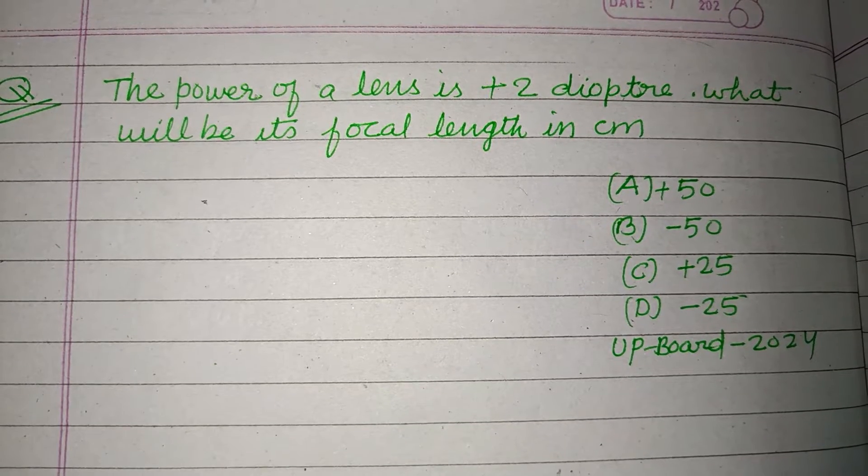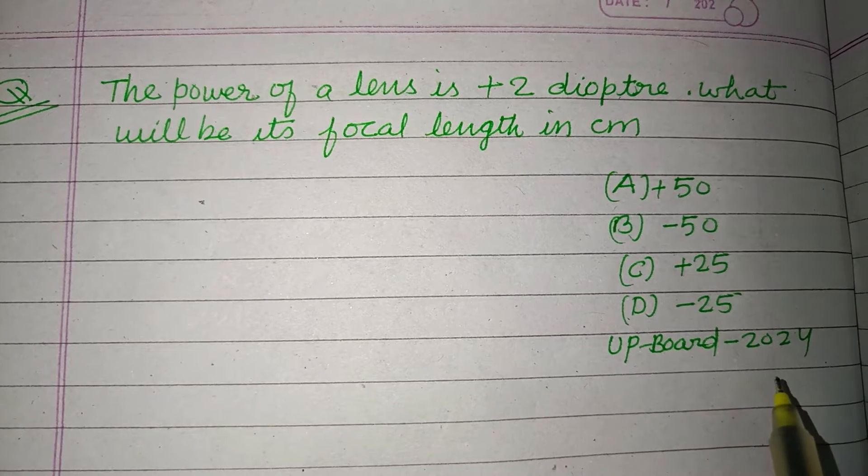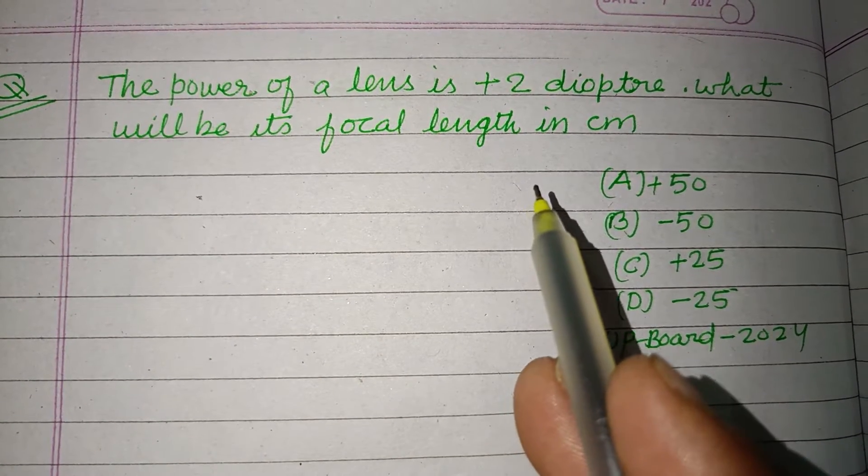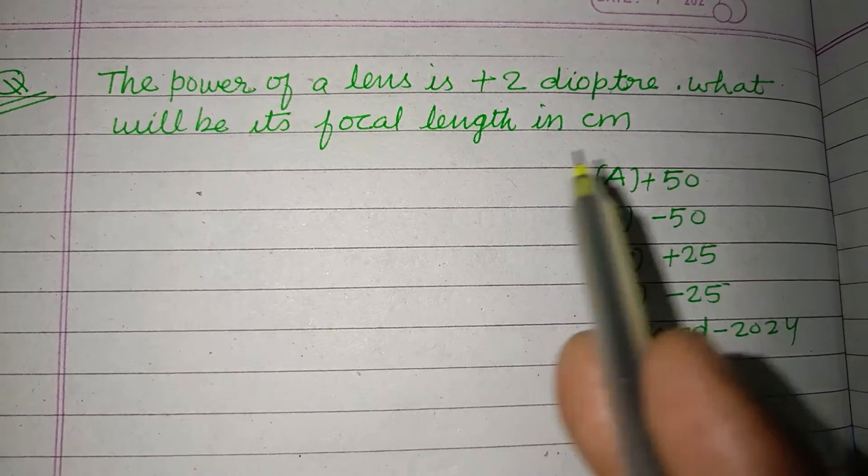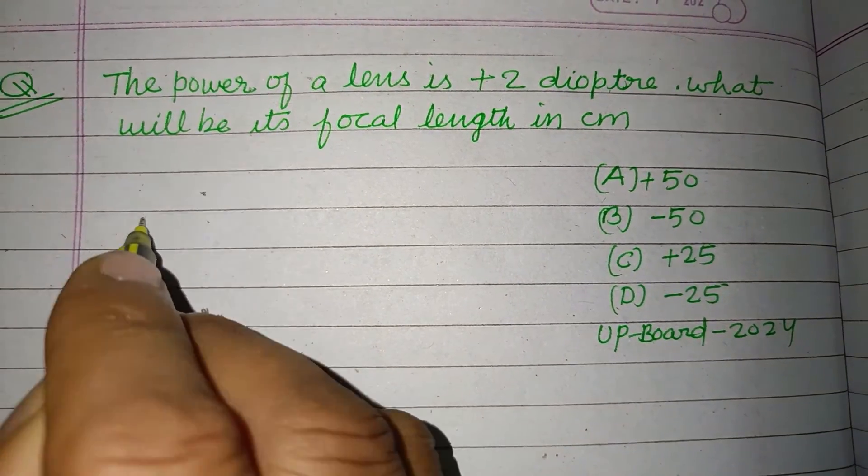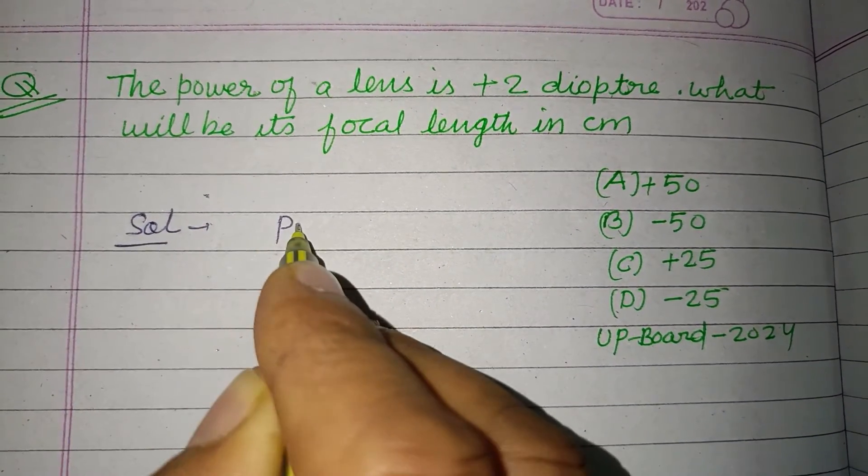Hello viewers, warm welcome to this YouTube channel. This is a question from UP Board exam 2024, class 10. The power of a lens is +2 diopter. What will be its focal length in centimeter? So student, here power of